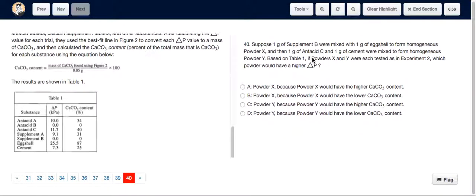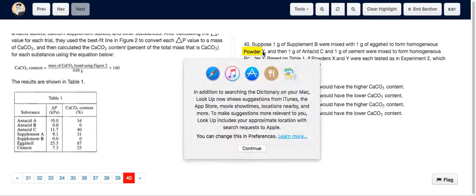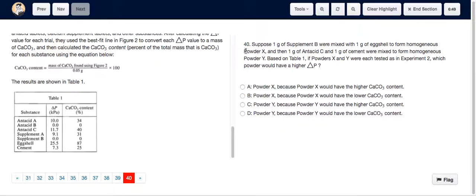For question 40, we just have to figure out whether powder X has a greater calcium carbonate content or powder Y has a greater calcium carbonate content. So for that, we just have to check what the two are made of. And we can see that powder X is 1 gram of supplement B mixed with 1 gram of eggshell.